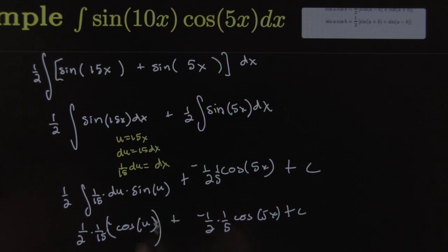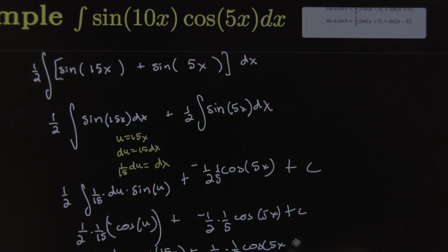Here I would replace that u, that would be one-half times one over 15 cosine of 15x plus one-half times one over 5 times cosine of 5x.